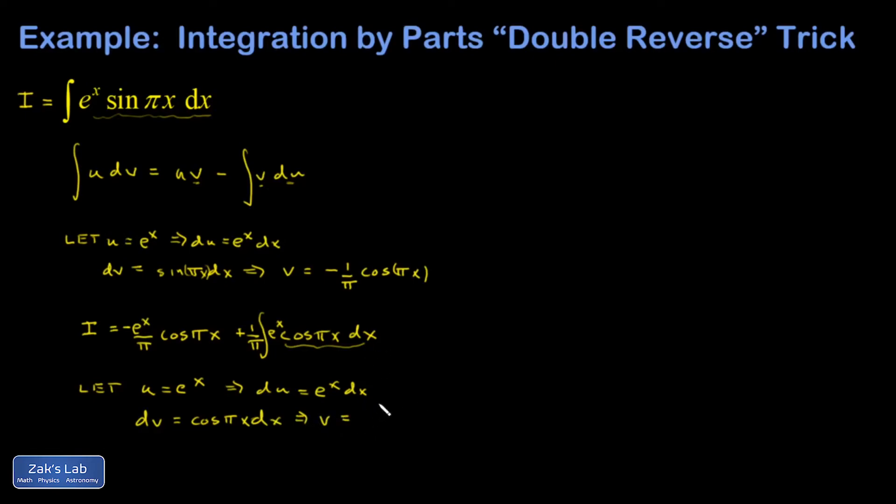Let DV equal cosine πx dx, which gets the antiderivative of V. And I end up with V equals basically sine πx. But if I differentiate that, I'm missed by a factor of π. So I need to prepare for that. And now I'm ready to re-express this integral. So I have I equals negative e^x over π cosine πx plus 1 over π times this new integral that I've transformed. So I'm going to put that in brackets. And I get a UV out of that. So that's e^x times 1 over π sine πx.